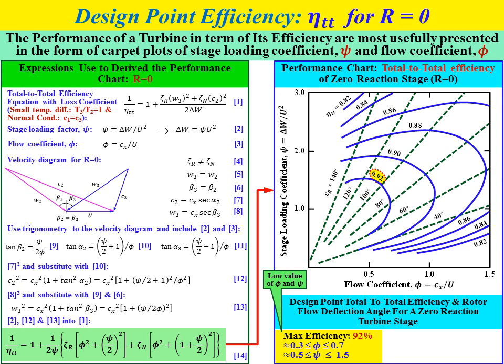Using trigonometry with equations 2 and 3: tangent beta2 equals stage loading coefficient divided by (2 times flow coefficient), equation 9; tangent alpha2 equals (stage loading coefficient divided by 2) plus (1 divided by flow coefficient), equation 10; tangent alpha3 equals (stage loading coefficient divided by 2) minus (1 divided by flow coefficient), equation 11. The performance chart for R equal to 0 represents a limit because R lower than 0 causes larger losses in the rotor. For example, with flow coefficient equal to 0.4 and stage loading coefficient equal to 2.3, the total-to-total efficiency is around 87% and the deflection angle is around 140 degrees.